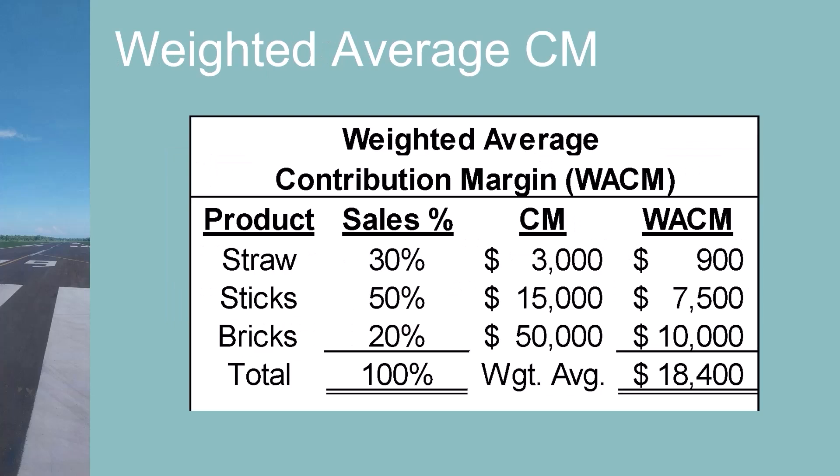We will use the assumptions from the previous slide to construct a weighted average contribution margin, used in place of the single product contribution margin in earlier CVP and break-even calculations. Each product's sales mix percentage is multiplied by the contribution margin for that product, and the sum of those products is the weighted average contribution margin, which is $18,400 in this example.